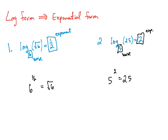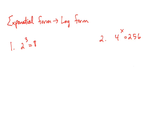Next let's look at how we can go from exponential form to log form. A log expression is always equal to the exponent. In the first example, the exponent is 3 and the base is 2, which becomes the base of the logarithm, and the remaining number goes inside the argument — so log base 2 of 8 equals 3. In the second example, the base is 4, the exponent is x, and 256 becomes the argument of the log expression.